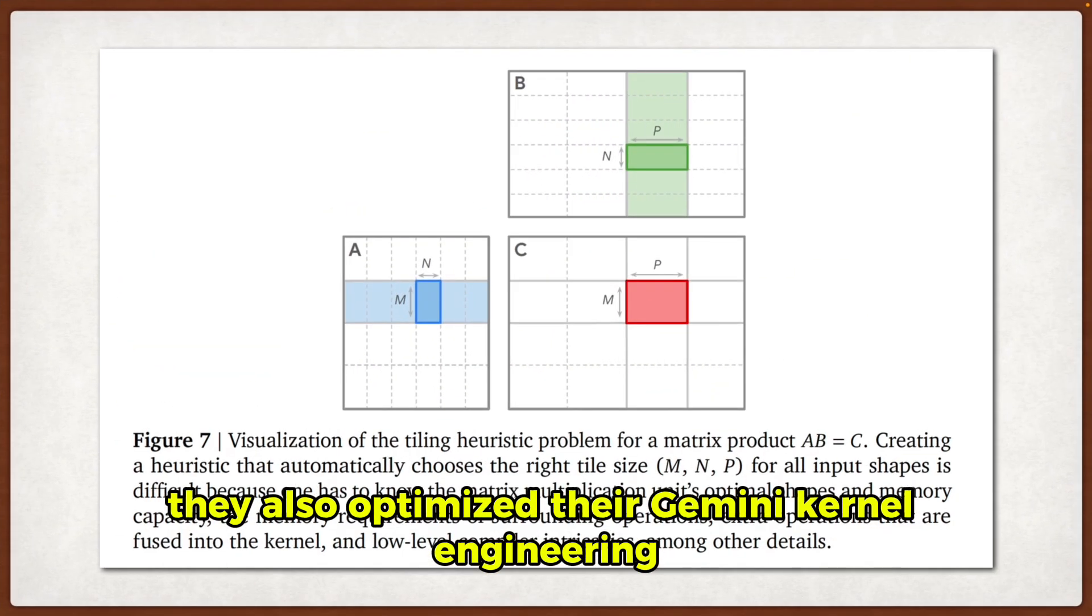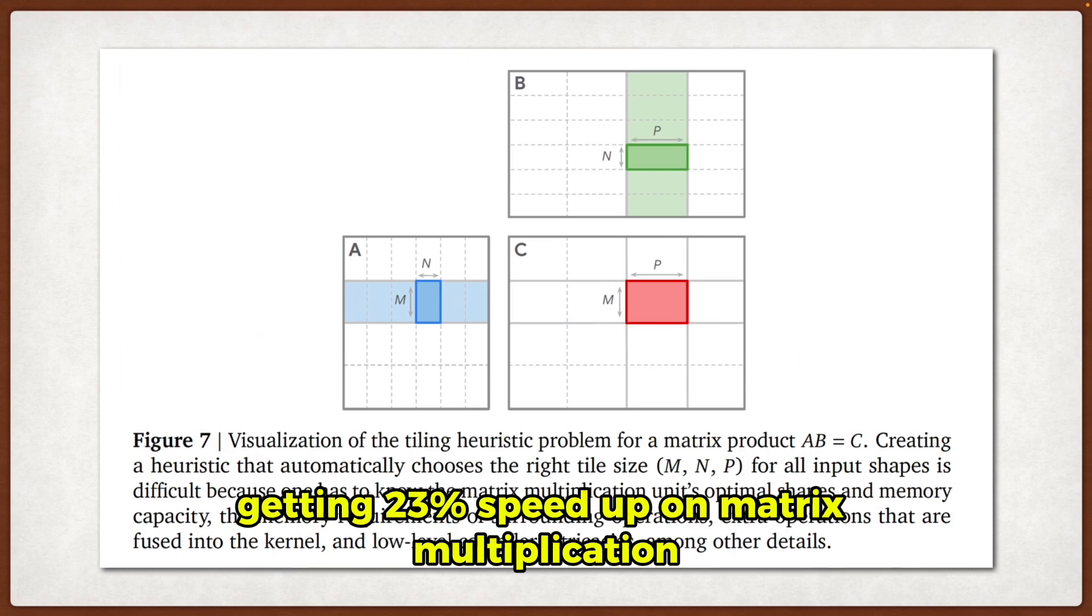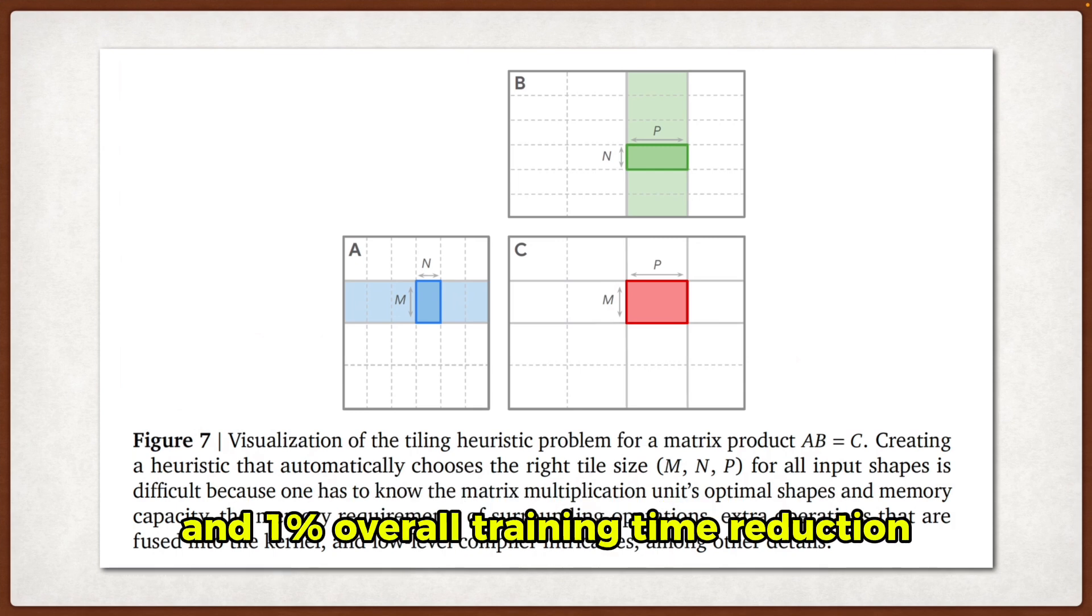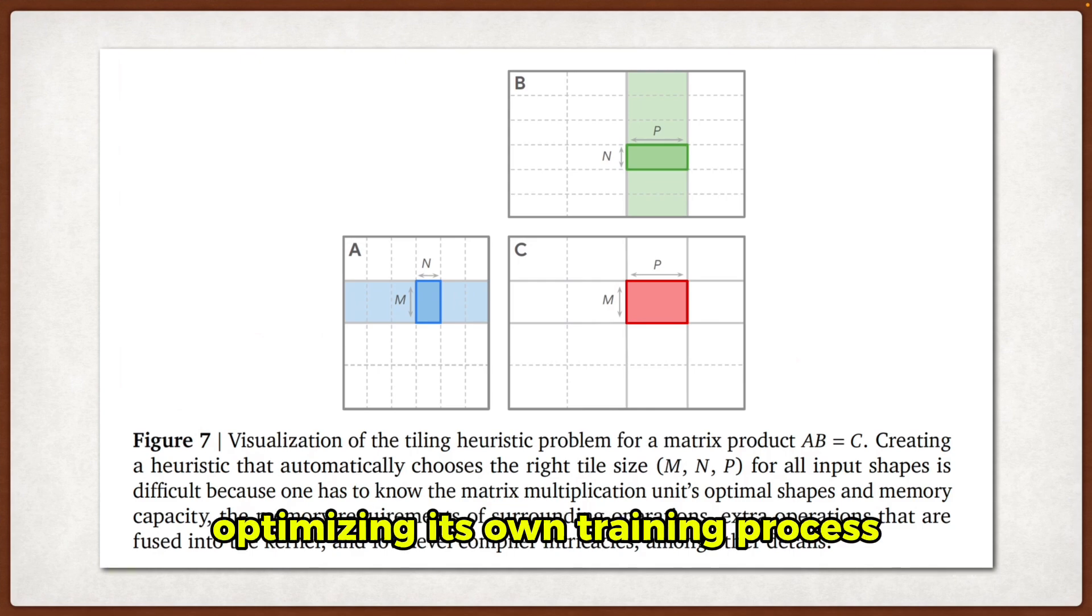They also optimized their Gemini kernel engineering, getting 23% speedup on matrix multiplication and 1% overall training time reduction. And they even used it to optimize TPU circuit design. So, Gemini is literally optimizing its own training process through AlphaEvolve.